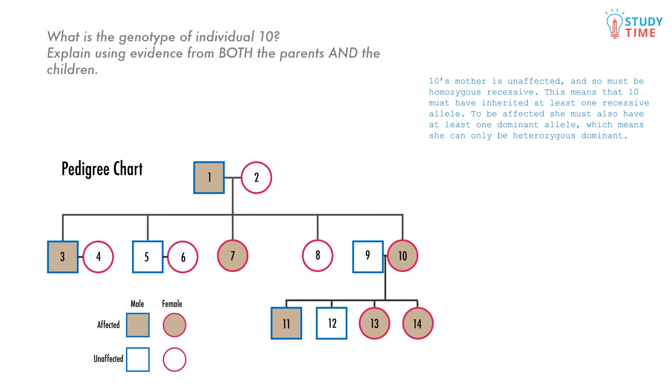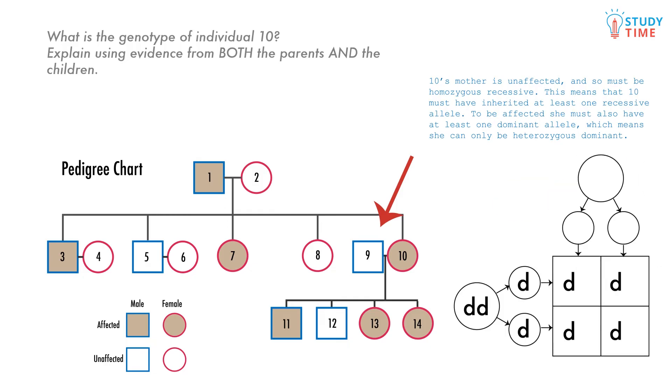Let's check if we've answered the question. Not quite. We haven't given any evidence using the children of individual 10. Let's look at them. We can see three are affected, and one is unaffected. We can also see that the father of these children is unaffected, and so he must be homozygous recessive. Both of his alleles are recessive. This means all the children have at least one recessive allele from their dad. But we can see that there are both affected and unaffected children.